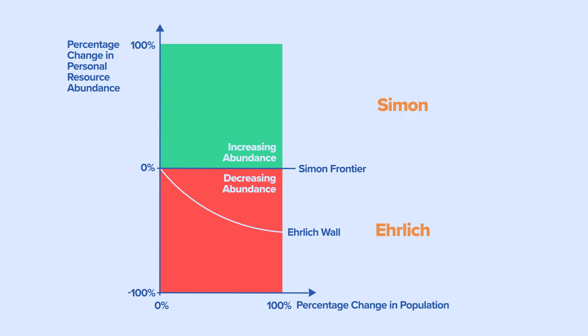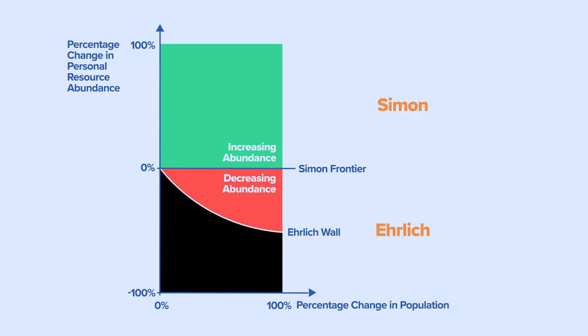Note that this line is curved because personal resource abundance can only decrease by 100%. The area below the Ehrlich Wall is the zone of collapsing abundance. In this zone, personal resources shrink at a faster rate than population grows. The area above the Ehrlich Wall and below the Simon Frontier is the zone of decreasing abundance, where personal resources shrink, but at a slower rate than population grows.